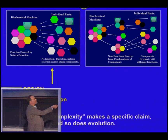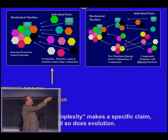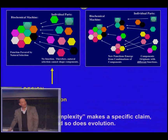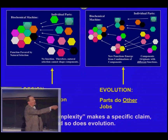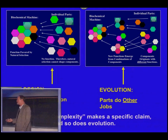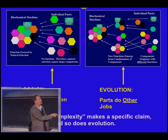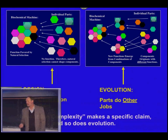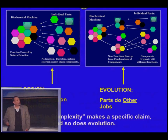The argument about irreducible complexity and the evolutionary argument can be compared. If the design argument is right, then the individual parts of these machines should be absolutely useless on their own. But if the evolution explanation is right, these parts should do other jobs. This is exactly what an experimental scientist wants — we want to take the parts apart, see what they do, and if they can't do anything, the design argument might be right; but if they do have individual functions, then the evolution explanation is likely correct.